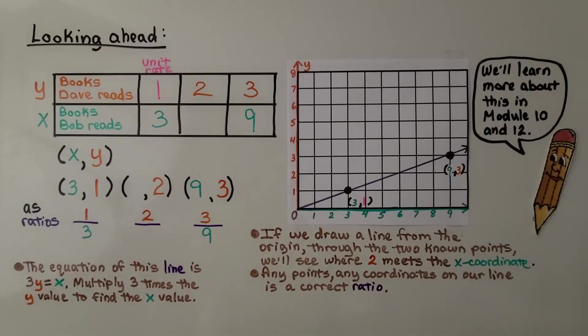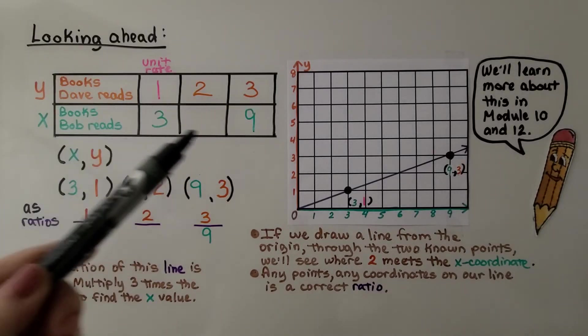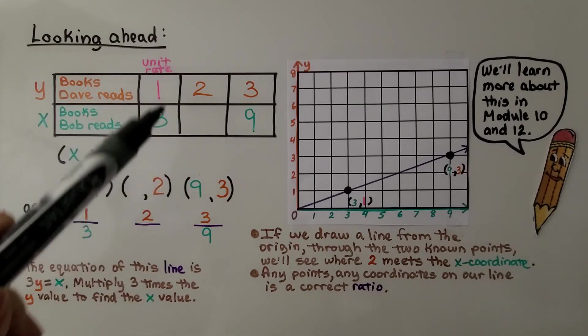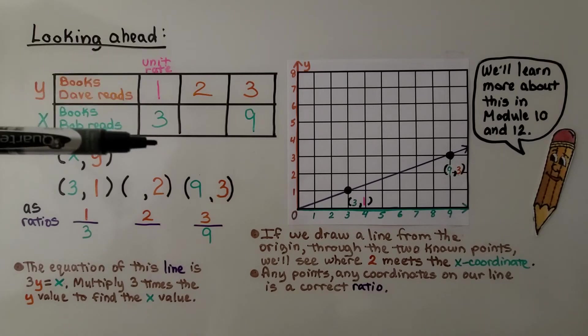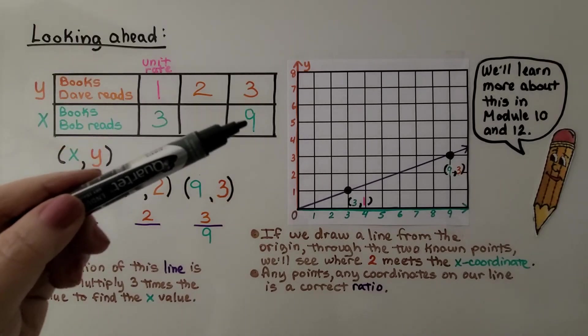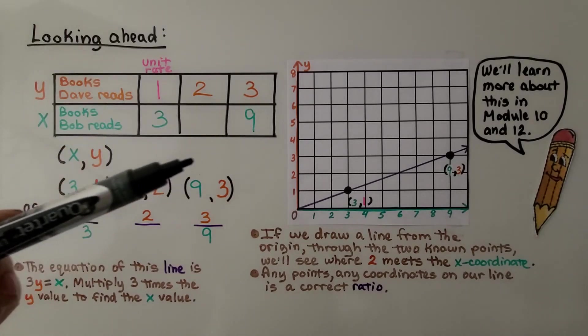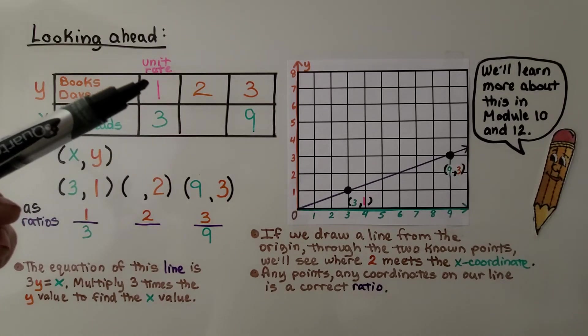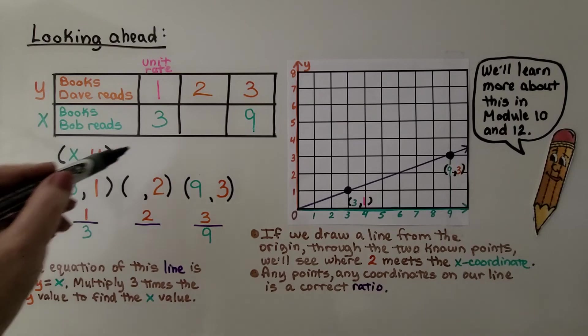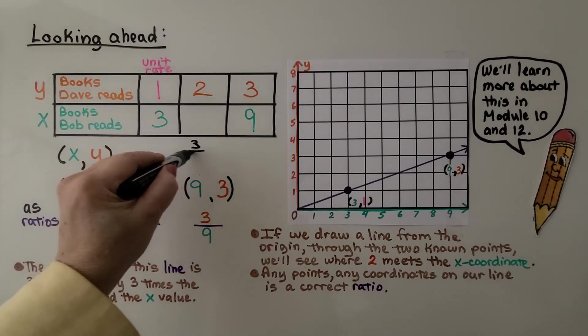Now, if you remember in the last video, we also did Dave's books to Bob's books. We found that for Dave to read 3 books, Bob read 9. And we completed our table. So this is our unit rate. If Dave reads 3 and Bob reads 9, that means Bob reads 3 for every 1 that Dave reads. So our unit rate was a 3 over a 1, wasn't it?